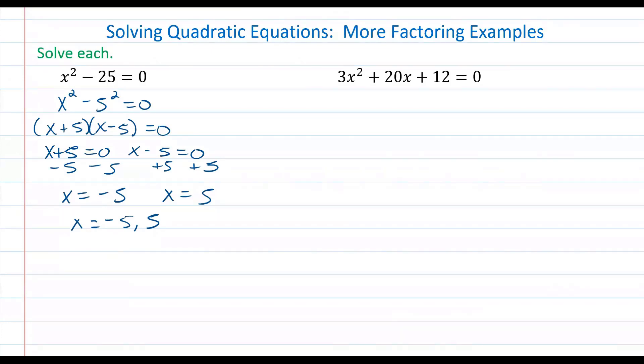Now we have 3x squared plus 20x plus 12 is equal to zero. A lot of people I work with tell me that the three causes them lots of problems, so they run into difficulty factoring the left side whenever they have a value there that's not equal to one. So what I'm going to do is go through what's called the factor by grouping method to demonstrate a step-by-step procedure on how you can factor the left side.